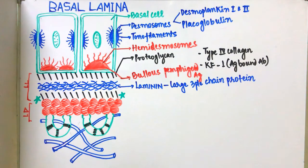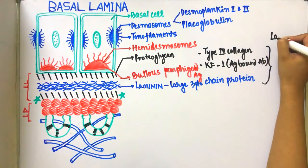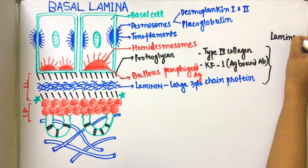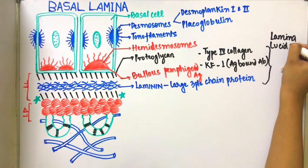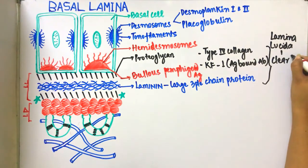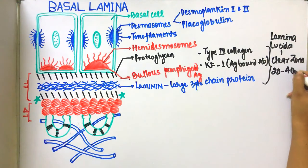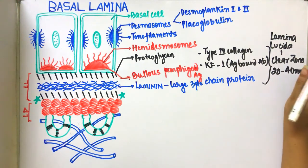So, these are the constituents of lamina lucida. Lamina lucida is a clear zone. Its thickness is 20 to 40 nanometers. It is present just below the epithelial cells.